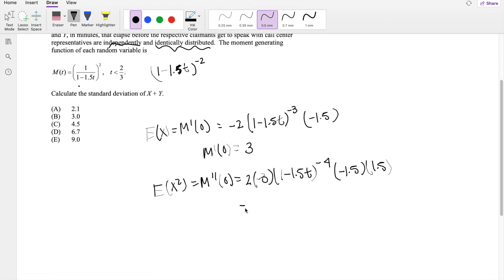So then this is equal to 2 times 3 times 1.5 squared. And again, when I plug in zero, this is just 1. So this is equal to 13.5.